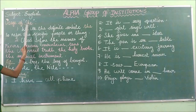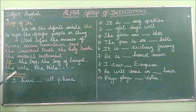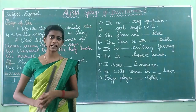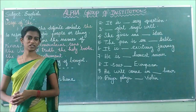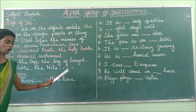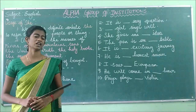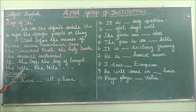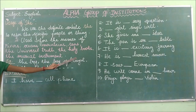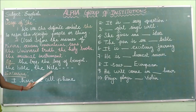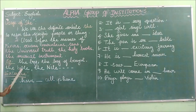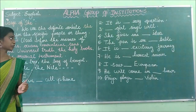Now let us see examples for the article 'the': the boy, the Bay of Bengal, the Bible, the Nile. 'The boy' — boy is a person, and we are pointing to a particular boy, so we use 'the'. 'The Bay of Bengal' is a sea, so we use 'the'. 'The Bible' is a holy book, so we use 'the'. 'The Nile' is a river, so we use 'the'.